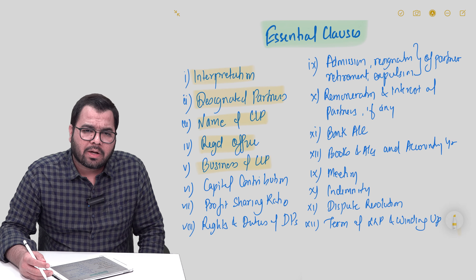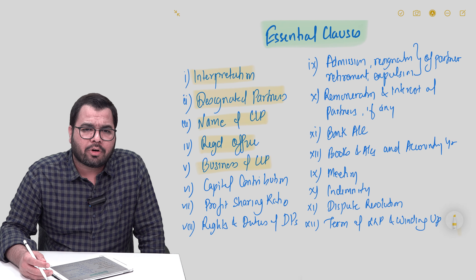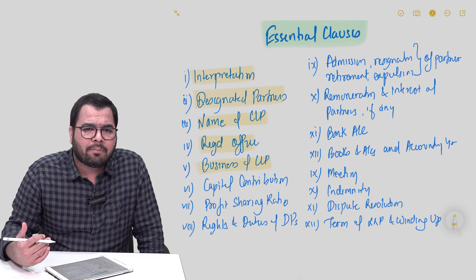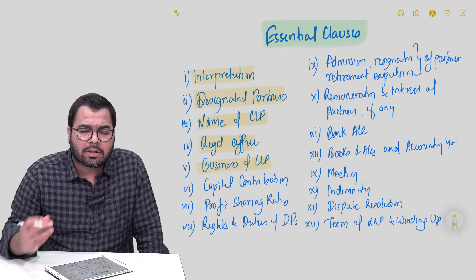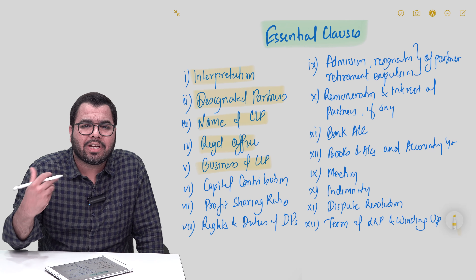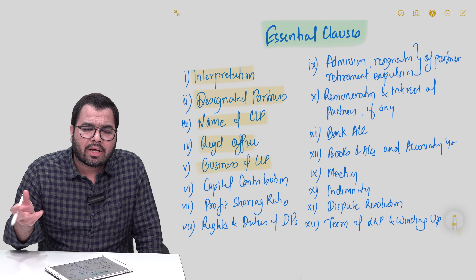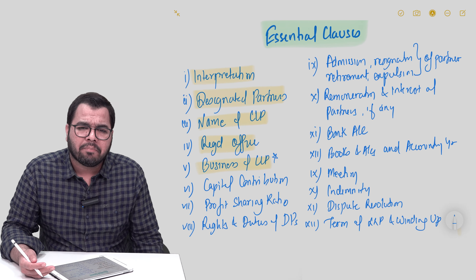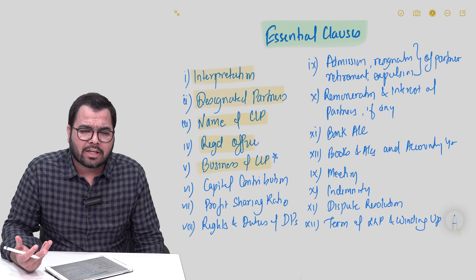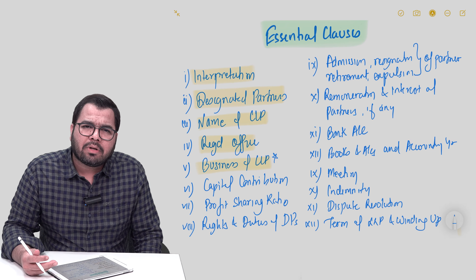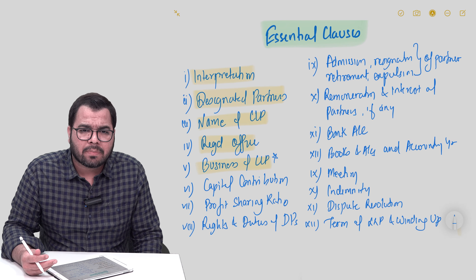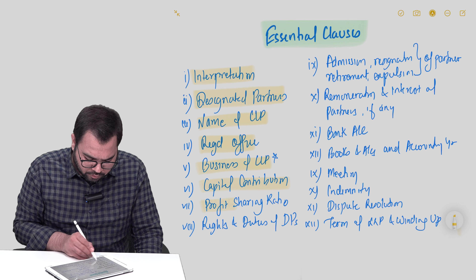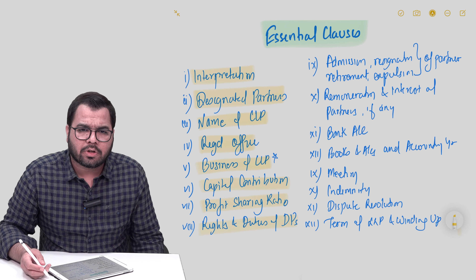This becomes very important when you think of foreign investments. In the second module, under the economic laws clause, you will study that foreign investment can be made in LLPs, and the sector becomes important. The objective — which sector or industry the company operates in, such as telecom, multi-brand retail, consulting, or IT — must be specified. Then, how much capital is being contributed, the profit-sharing ratio between partners, and the rights and duties of the partners all need to be defined.